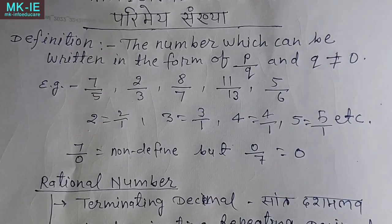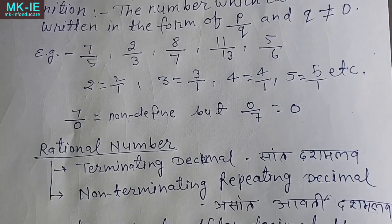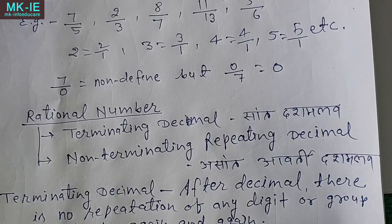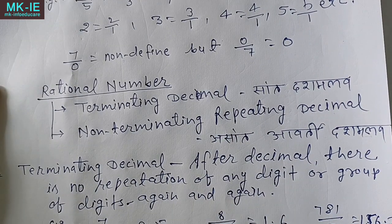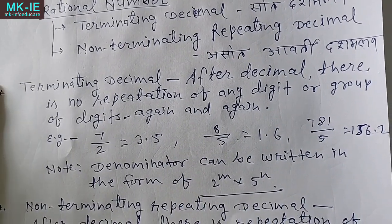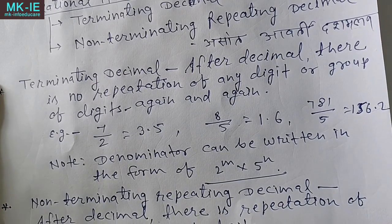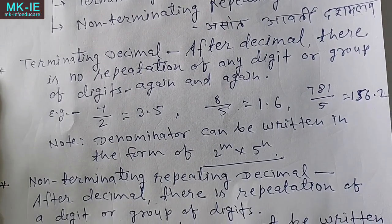तो इस तरह से हम rational number के बारे में समझ गए। Rational numbers जो होता है p/q का form होता है जहाँ q, 0 के बराबर नहीं होना चाहिए, और p और q कोई integers होते हैं। Rational numbers को या तो terminating decimal या non-terminating repeating decimal में express किया जा सकता है। I hope कि ये video आपको पसंद आया होगा। See you next video. Goodbye.